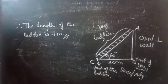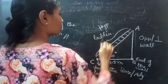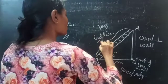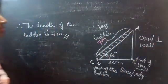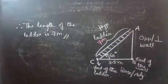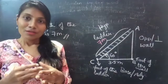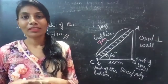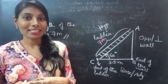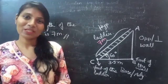This concludes the problem. The length of the ladder is 7 meters. In this video, we have seen a problem on heights and distance. Hope you will understand. We will see you in the next video.